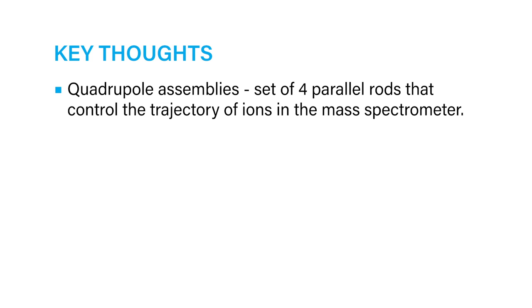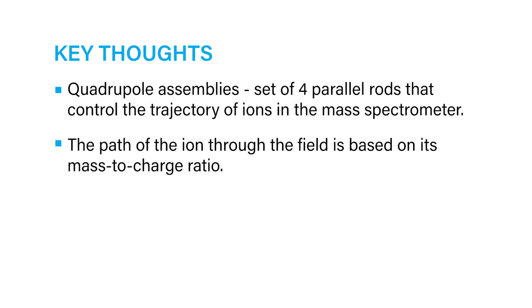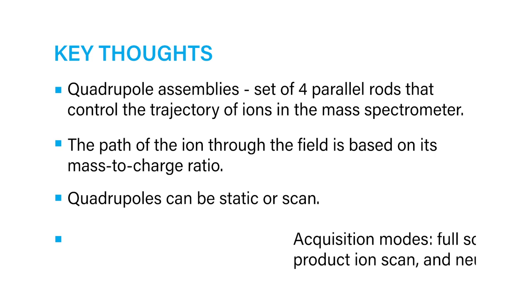A fluctuating field is generated inside the quadrupole by applying RF and DC voltages to the quadrupole rods. The path of the ion through the field is based upon its mass-to-charge ratio. Quadrupoles can be static, where the RF and DC settings are optimized to transmit only the mass-to-charge ratio of interest, allowing only those ions through the mass spectrometer.